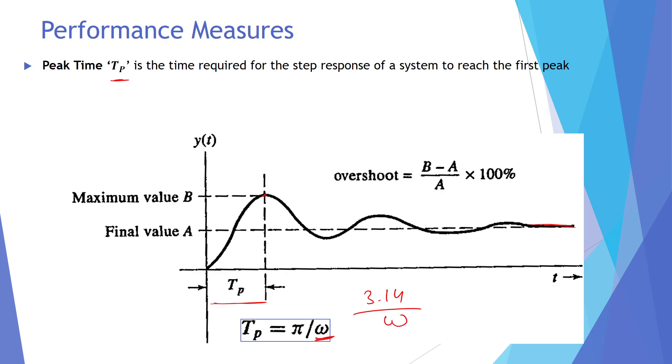If we know the true oscillation frequency, we can find out the peak time by dividing π by ω. This is the time required from the start of the response when t equals zero to reaching the first peak. The highest value of the first peak is also the maximum value B, and the time required to reach this maximum value is the peak time.